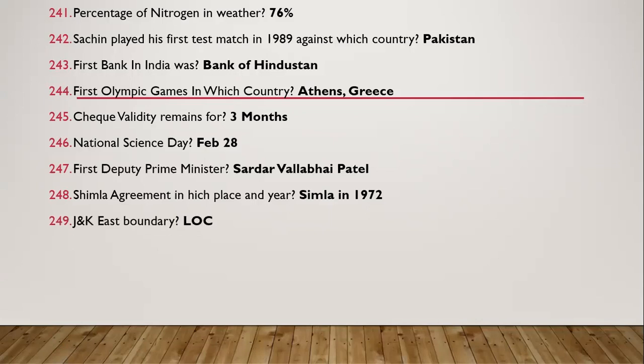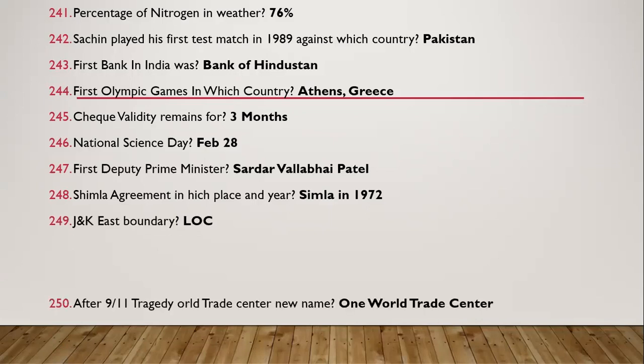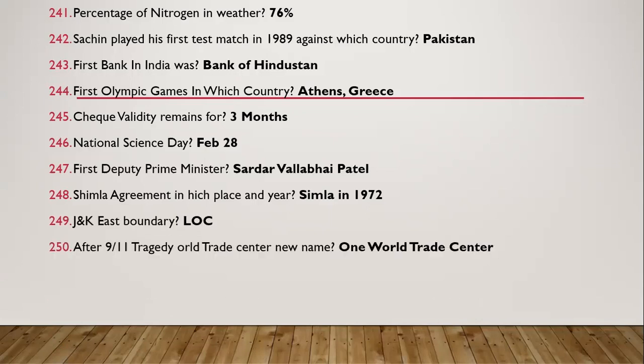Question 238: Jammu and Kashmir's eastern boundary — we call it the LOC (Line of Control). Question 239: After the 9/11 tragedy, the World Trade Center was rebuilt with the new name One World Trade Center.